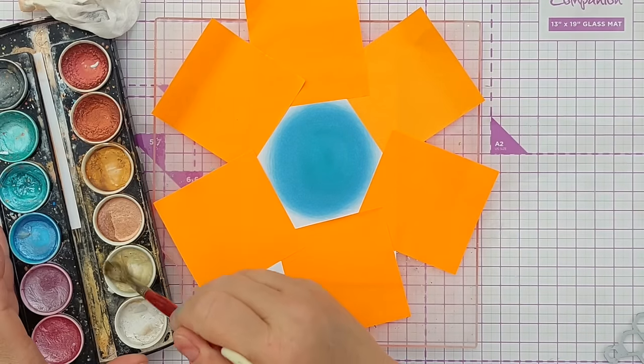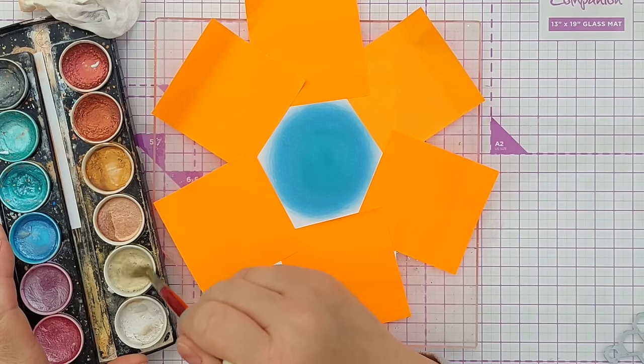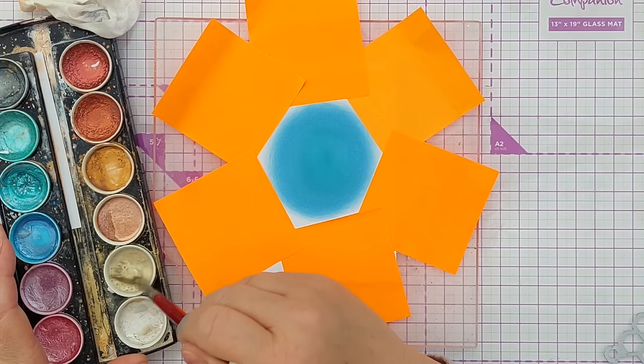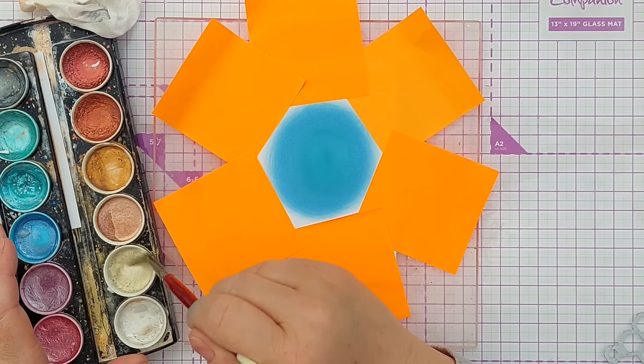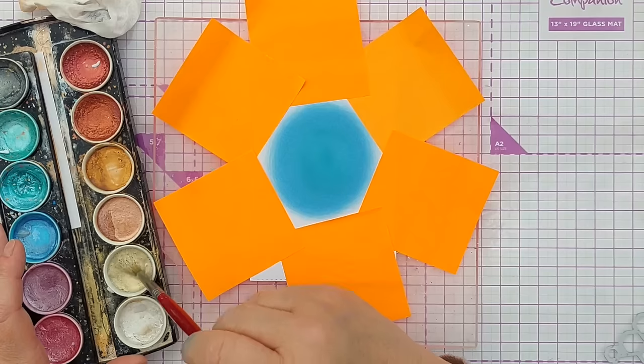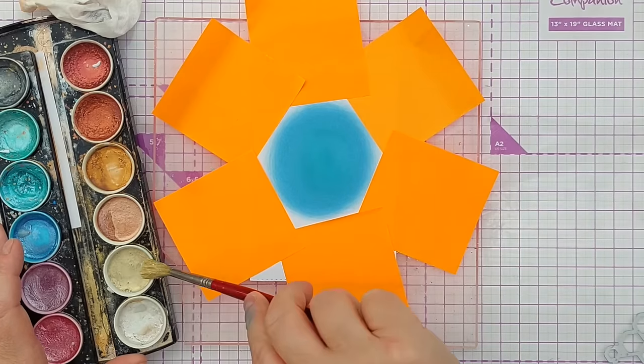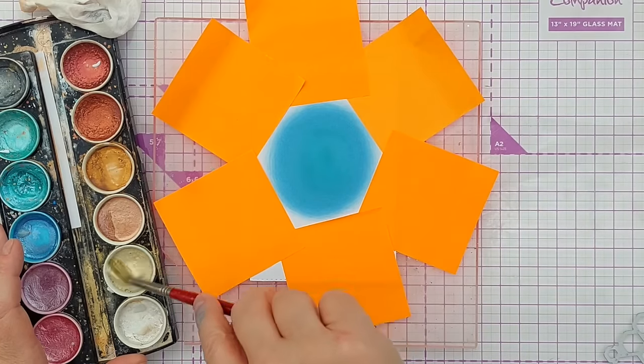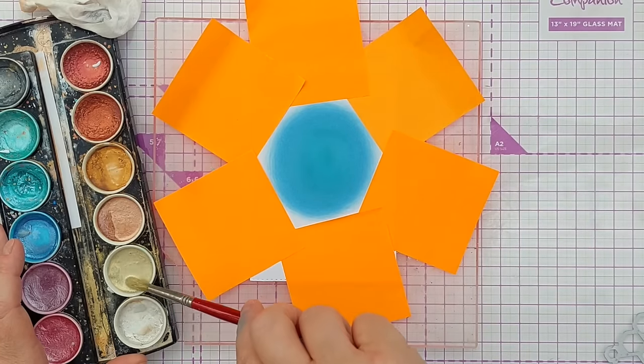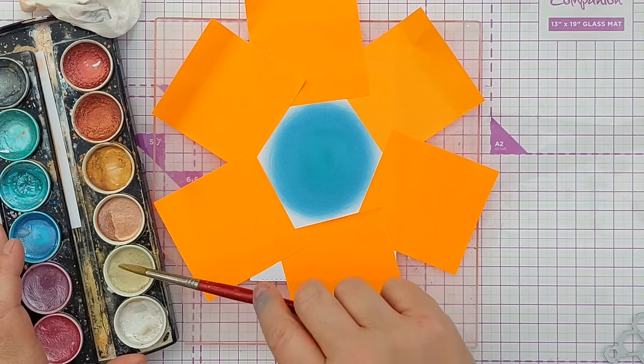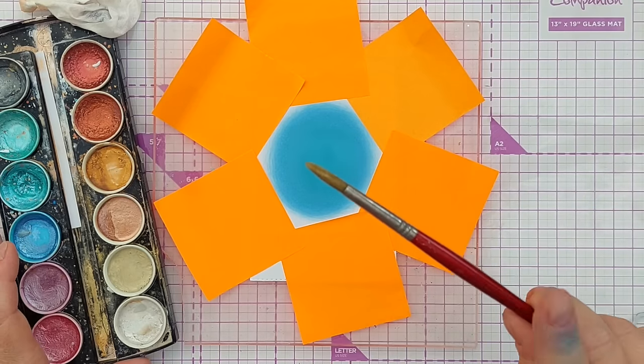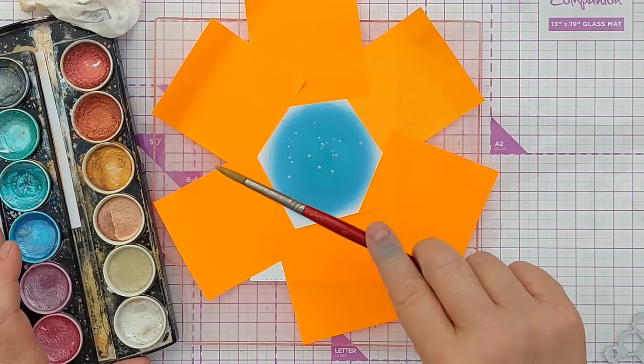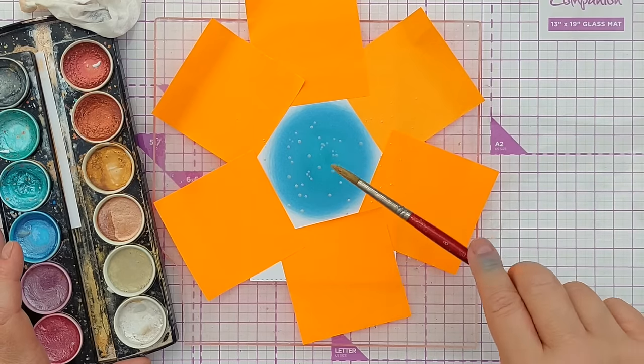And for my splatters I'm going to use a very pale gold from my Prima Metallic Accents palette. This is a hybrid of the Originals palette and the Pastel palette. And I'm going to take off as much of the liquid as I can because I don't want massive splatters. And I'm just gently going to splatter to get some small splats.